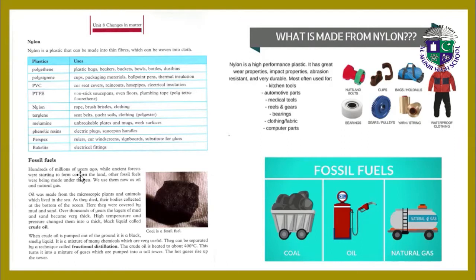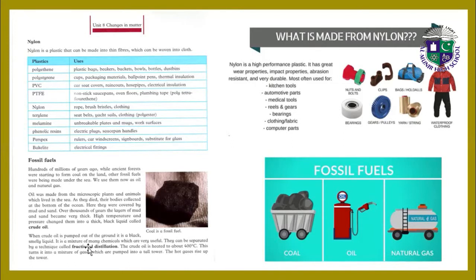Fossil fuels: hundreds of millions of years ago, while ancient forests were starting to form coal on the land, other fossil fuels were being made under the sea. We use them now as oil and natural gas. Oil was made from the microscopic plants and animals which lived in the sea. As they died, their bodies collected at the bottom of the ocean, covered by mud and sand over thousands of years. The layers of mud and sand became very thick, and high temperature and pressure changed them into a thick black liquid called crude oil.